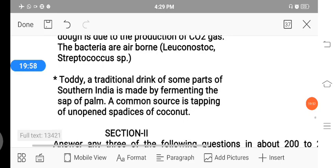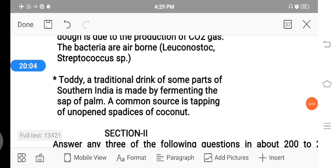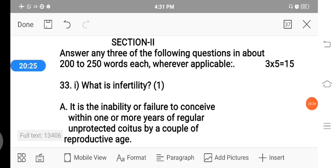Then the next household product is dough, which is used for making foods like dosa, idli, as well as fermented by yeast. This is fermented by bacteria. These dosa and idli have puffed appearance due to production of carbon dioxide. The bacteria are airborne. The bacteria may be Leuconostoc or Streptococcus species. Then the toddy, it is a traditional drink especially used in the southern parts of India. It is made by fermenting the sap of palm trees or coconut trees. This is the common source, tapping unopened spadix of coconut. These are the household products in which microbes are useful.